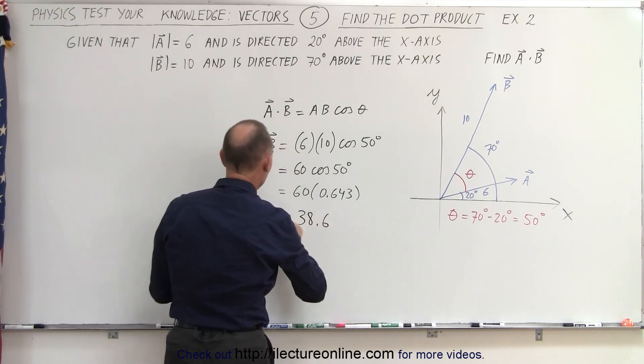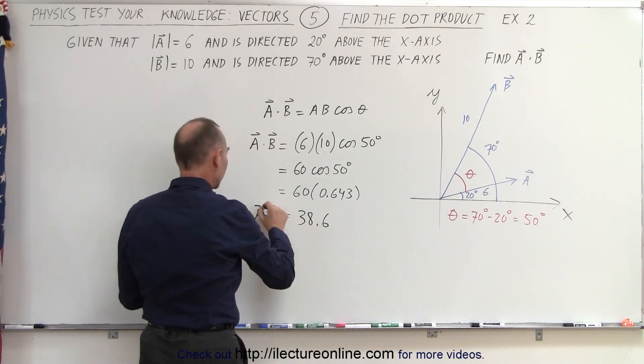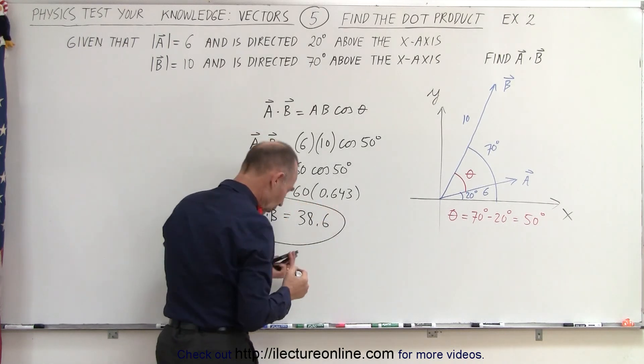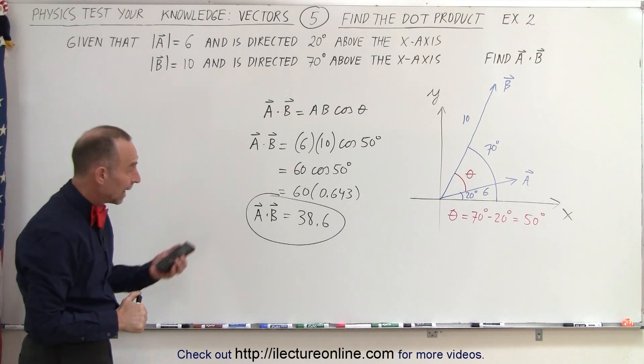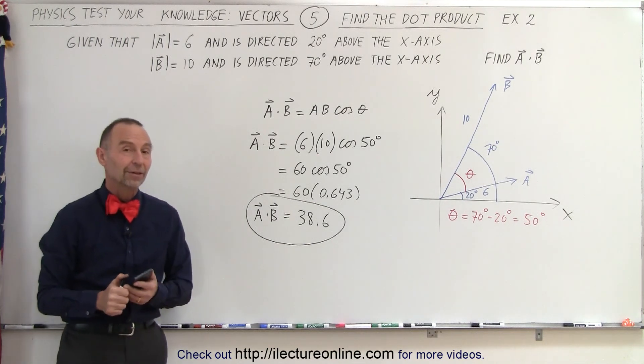Again, notice that the dot product between two vectors gives us a scalar quantity, no direction, it's not a vector quantity, and that would then be the solution of that dot product.